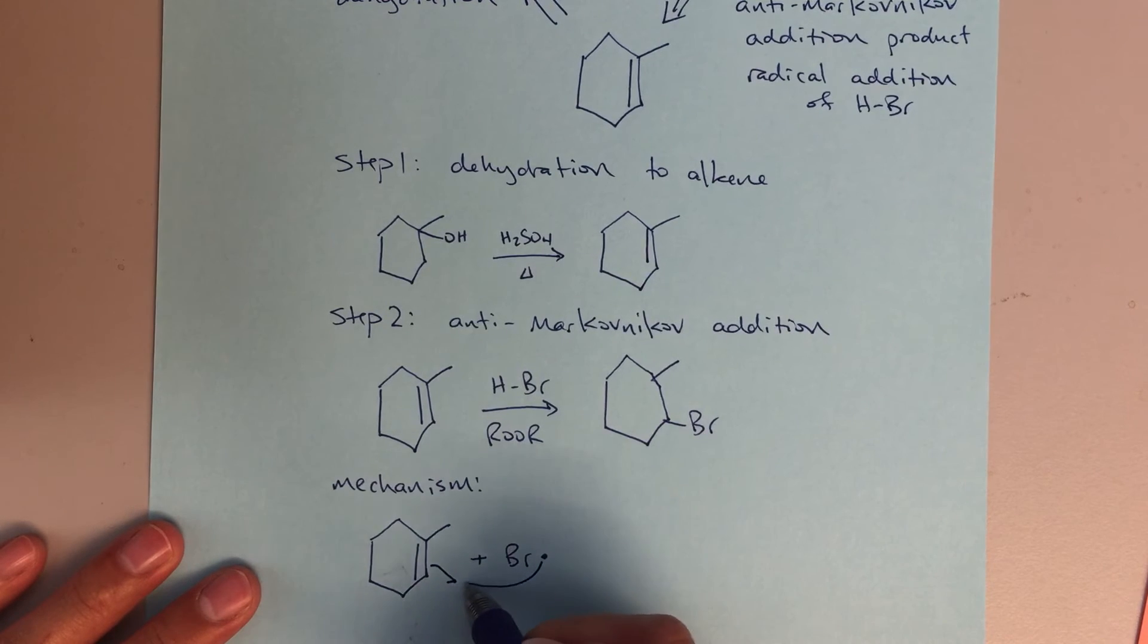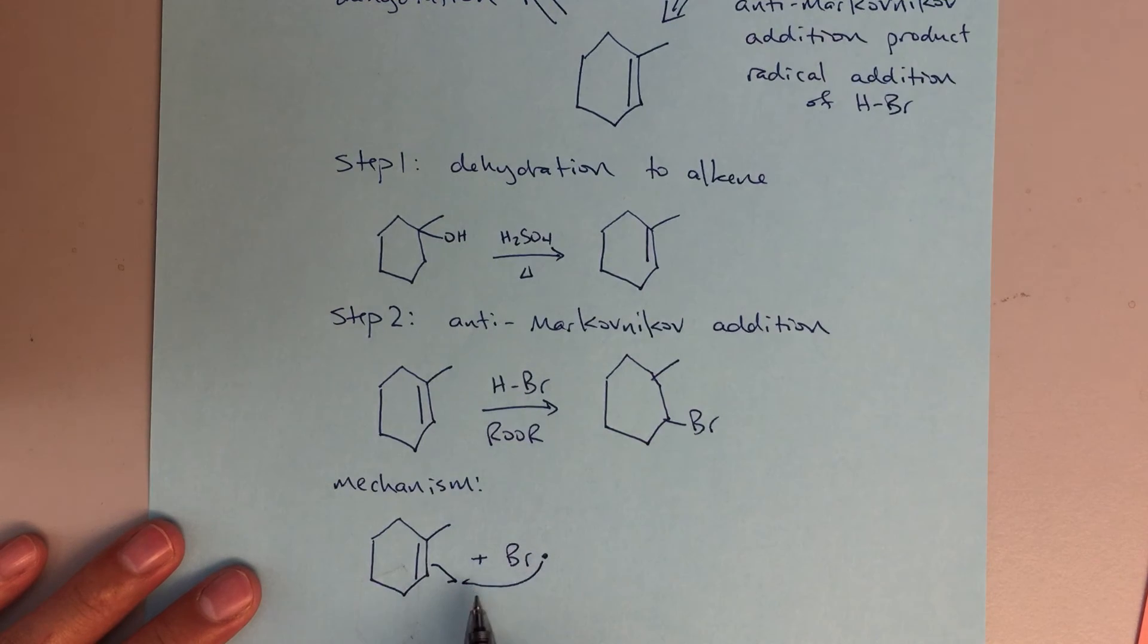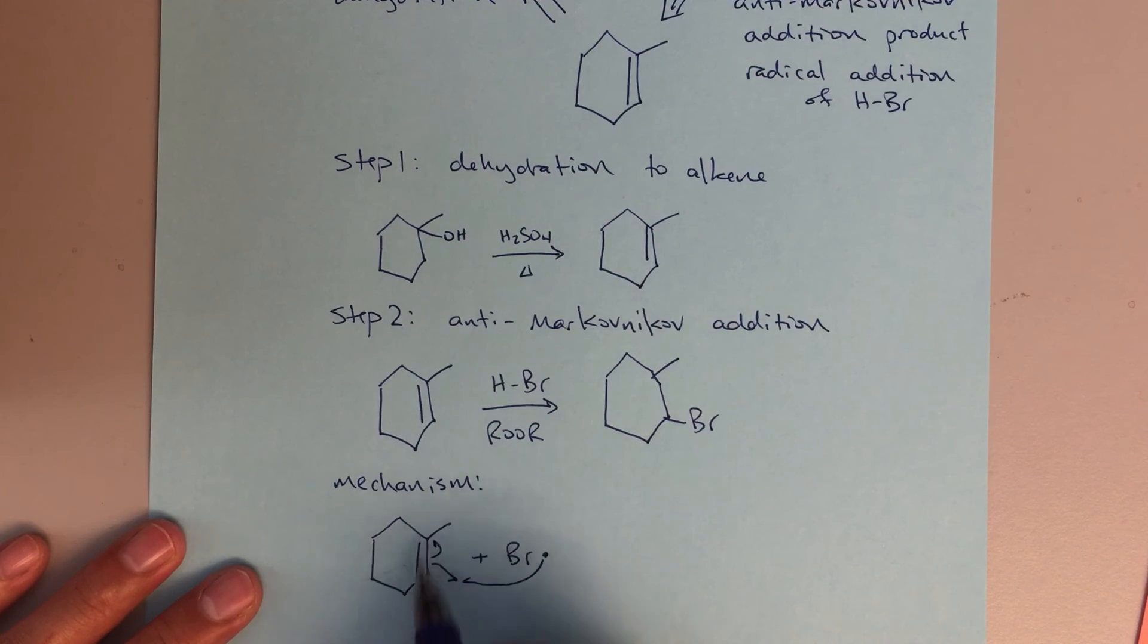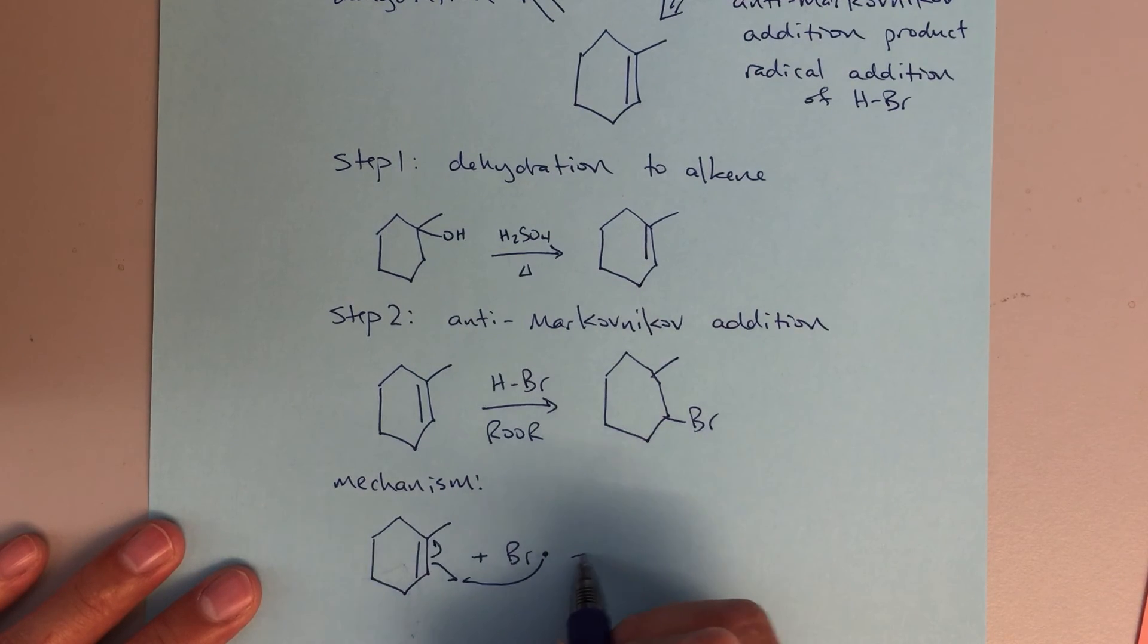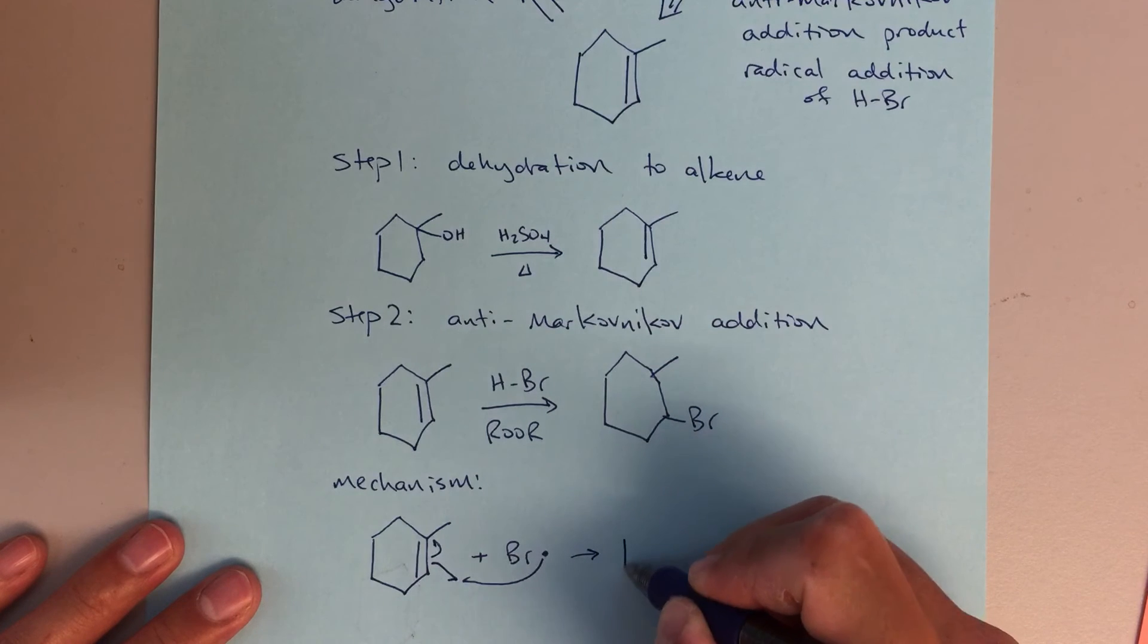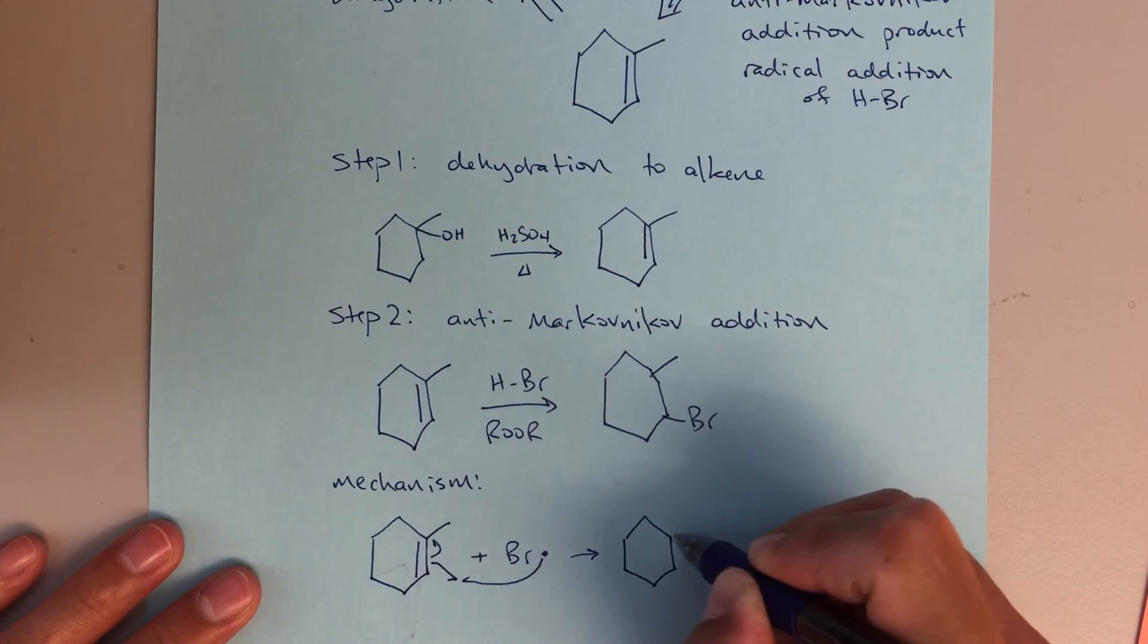So the way I'm going to draw this, these two arrows that I've first drawn indicate that only one electron is moving. The one electron from the Br radical is going to be forming a new carbon-bromine bond at this space here, and the other electron from this double bond is going to end up forming a radical here at the more substituted carbon. We're going to put that at the more substituted carbon because that's going to be a more stable intermediate, and that's always what we're looking for.